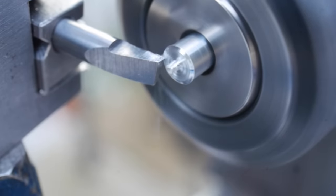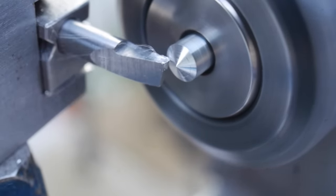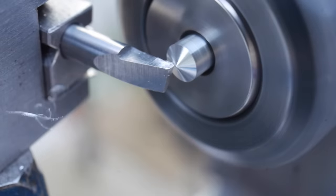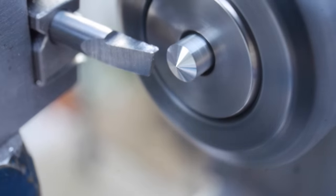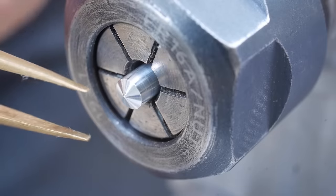I machine a point on the end of the displacer to reduce its drag coefficient. At this small scale it can be a challenge to achieve the required tolerances for the engine to even run, so I like to consider these small design features to improve its chance of running at the end.